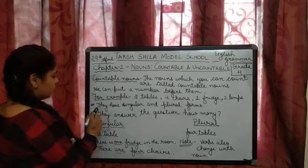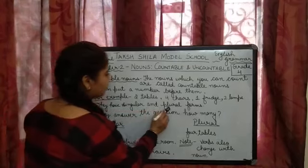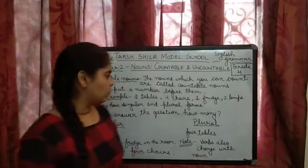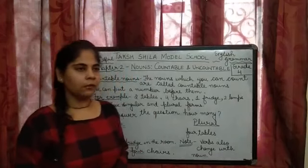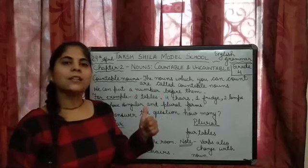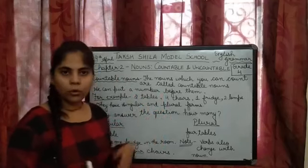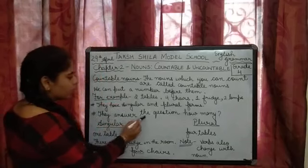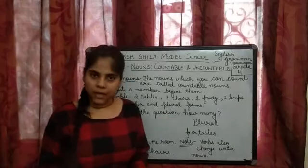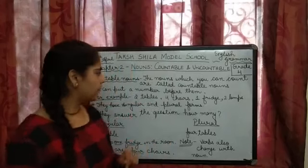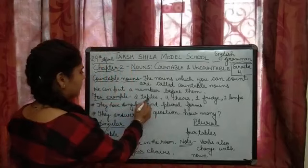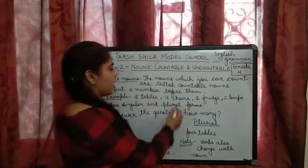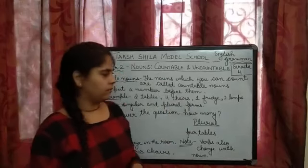Now, countable nouns have singular and plural forms. Singular means one, plural means more than one. When we talk about one thing, one noun, it is called a singular noun. When we talk about more than one thing, it is called a plural noun. They answer the question: how many? How many tables? How many lambs? How many chairs? How many fridges?